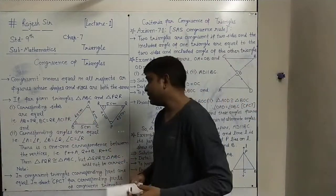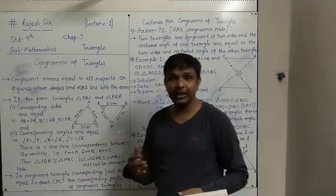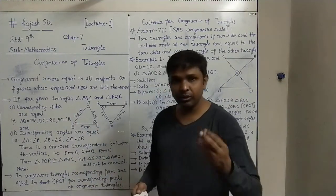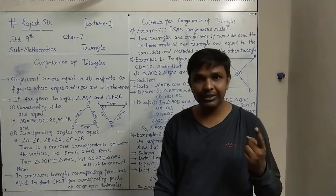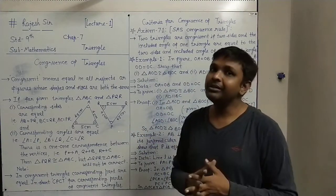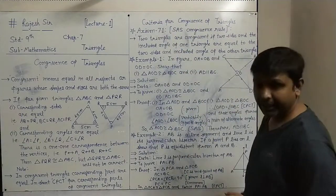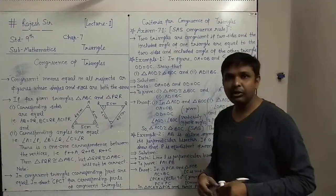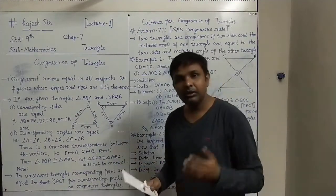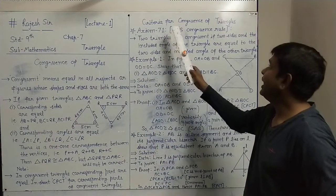Now, you might think that for two given triangles you always have to verify all six parts — all three sides and all three angles. But actually, it is not always necessary to show all six corresponding parts equal. By using some of the parts only, we can show both triangles are congruent. That is covered in the criteria for congruent triangles. The first such criterion is Axiom 7.1 — the SAS congruence rule.